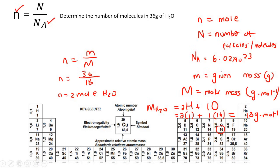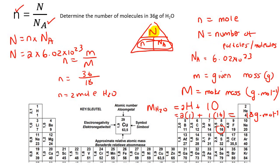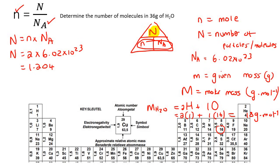Now we have the moles of H₂O and we have Avogadro's number, so we can calculate capital N. Using the triangle, N equals n multiplied by Nₐ — that is 2 multiplied by 6.02 times 10²³ — giving us 1.204 times 10²⁴ molecules of H₂O.